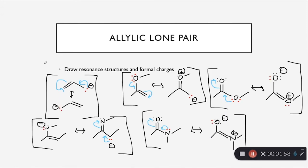Here we have the result of the electron pushing we did earlier. Take a second and look at these examples and see if you can follow the arrows that we drew. If not, there is another video on electron pushing and arrow pushing. Something else to look for are the formal charges.